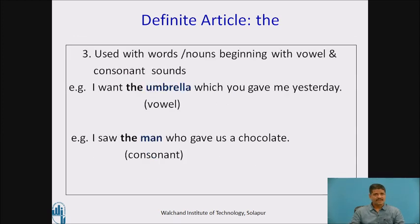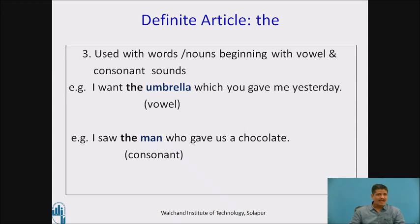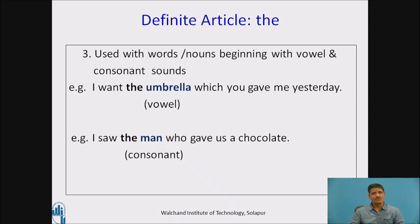Now let us understand rule number three for the definite article 'the'. The definite article 'the' is used with words or nouns beginning with both vowel and consonant sounds. Example: 'I want the umbrella which you gave me yesterday.' The noun 'umbrella' has a specific, definite, particular reference made clear by the which-clause, and the noun 'umbrella' starts with a vowel sound — hence we use the definite article 'the'.